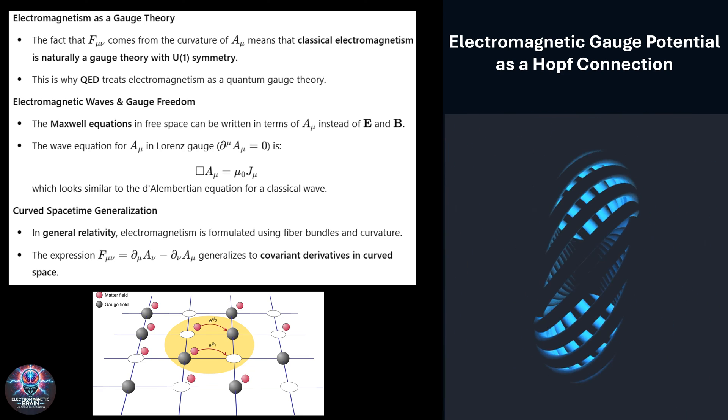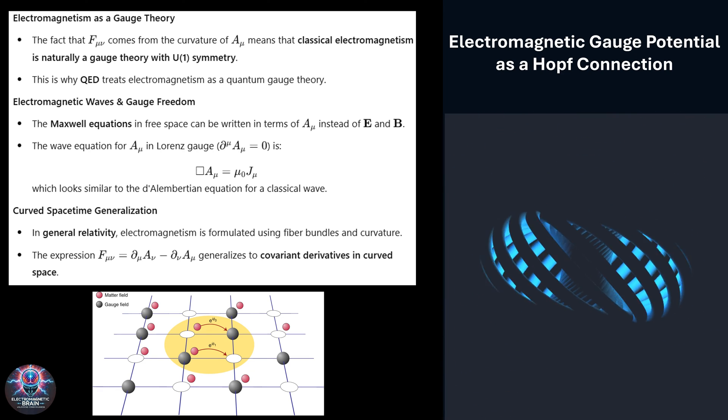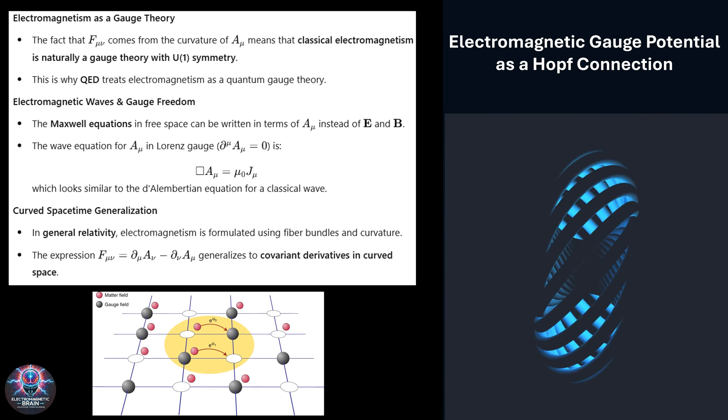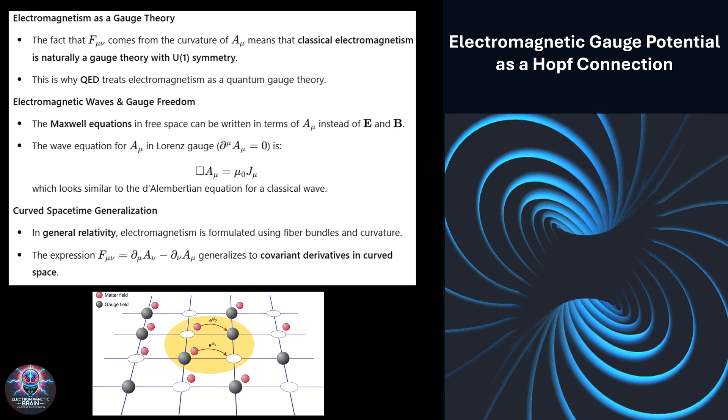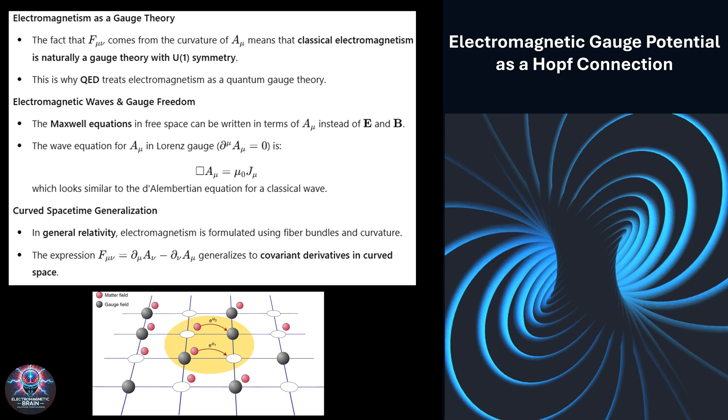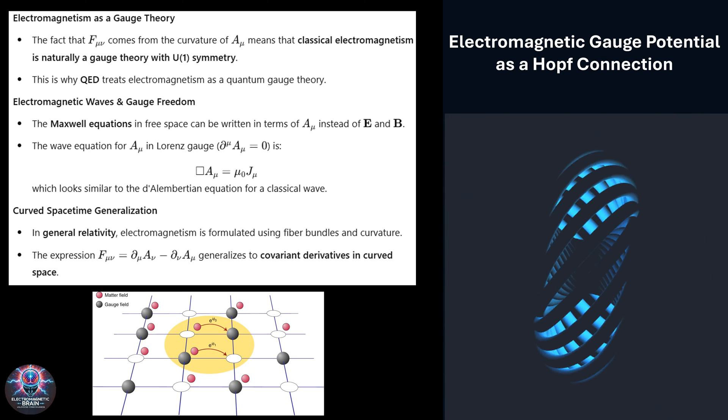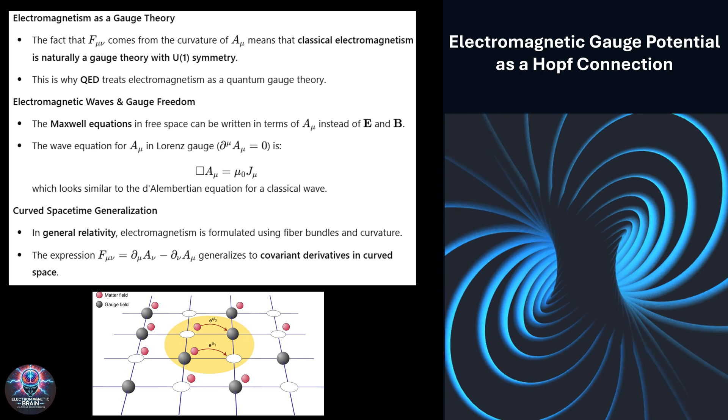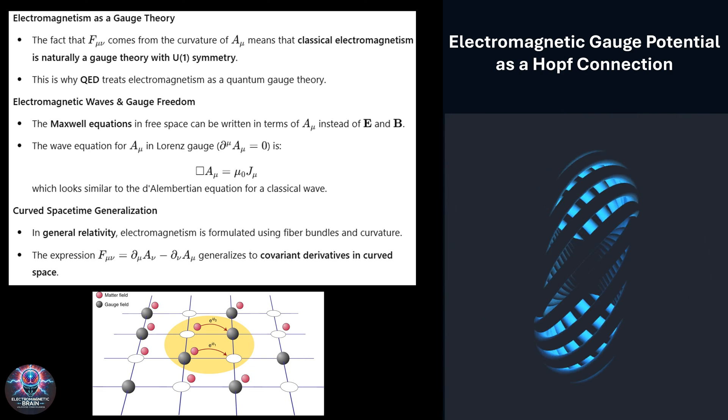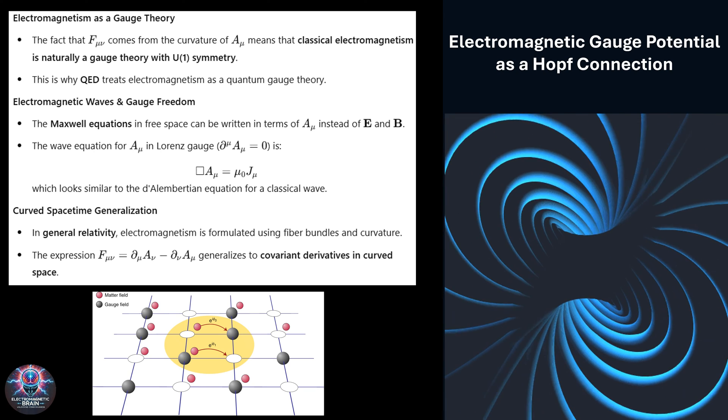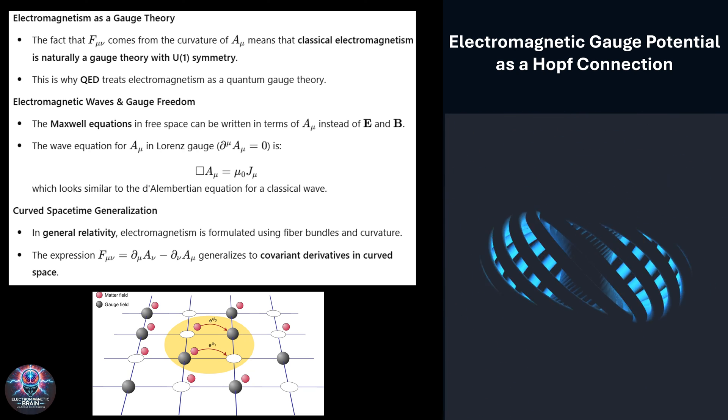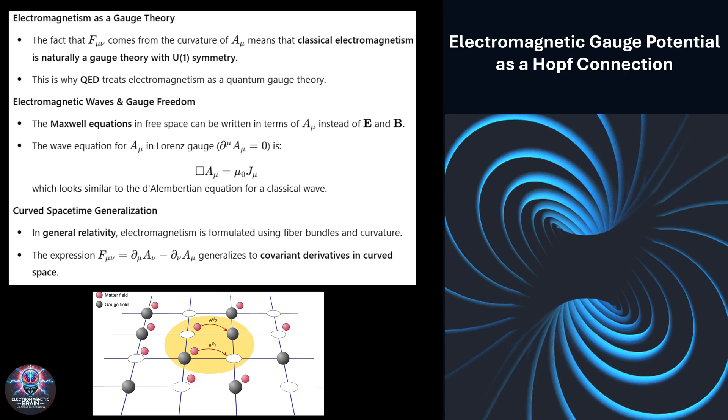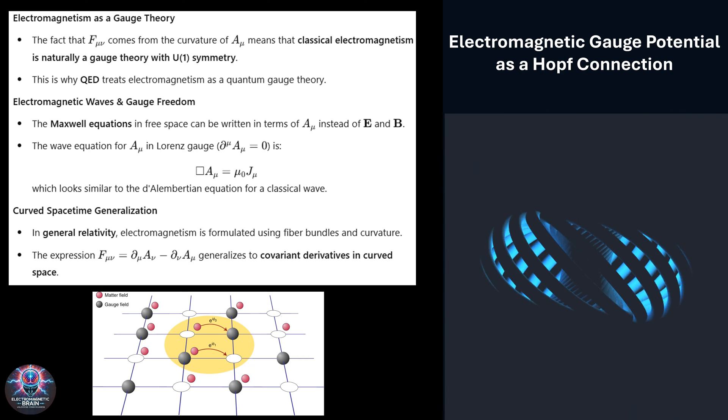To truly understand electromagnetism at a deeper level, we need to look at it through the lens of gauge theory. In this perspective, the electromagnetic potential A mu isn't just a convenient mathematical tool, it's a fundamental object that acts as a connection in a special kind of geometric space called a U(1) principal fiber bundle. What does this mean? Well, in simple terms, electromagnetism has a built-in symmetry, and this symmetry is what allows us to describe the same physical situation in different but equivalent ways. A key concept here is the field tensor F mu nu, which is essentially the curvature of this gauge connection. This is what gives rise to the familiar electric and magnetic fields.